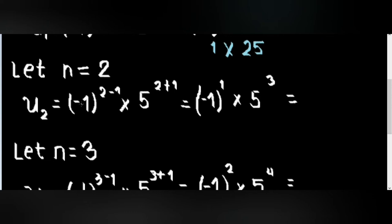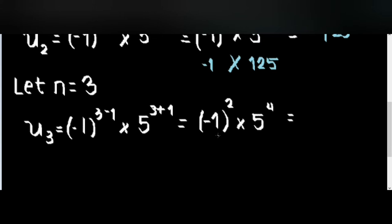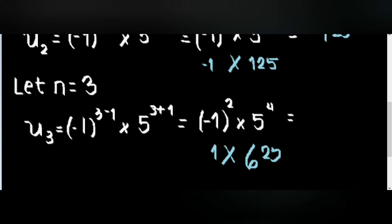Let n equal to 2: we have negative 1 raised to 2 minus 1 times 5 raised to 2 plus 1. We have negative 1 raised to 1, which is negative 1, times 5 raised to 3 is 125. Therefore, negative 1 times 125 is negative 125. Let n equal to 3: we have negative 1 raised to 3 minus 1 times 5 raised to 3 plus 1, which equals negative 1 squared is 1 times 5 raised to 4 is 625.